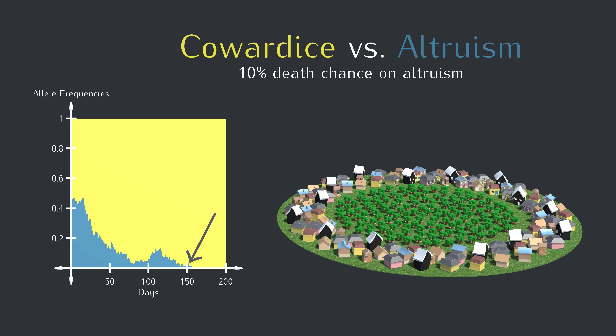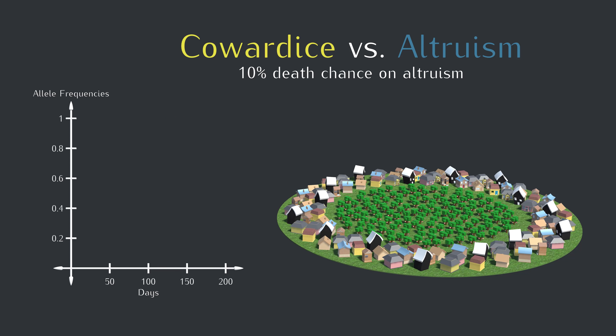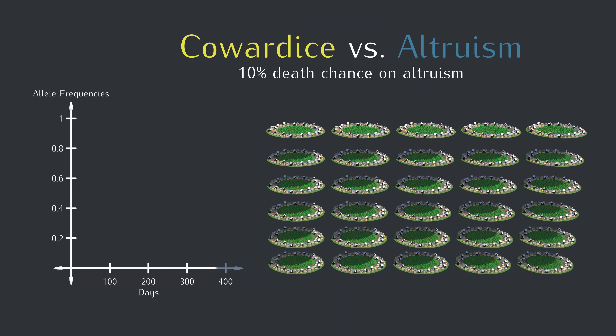Now you might think: we only tried this once — maybe it'll do better some of the time? So let's repeat 30 versions of the same situation. Predict ahead of time what you think will happen. Do you think the altruism allele will always go extinct? Or maybe the first run was a fluke, and the altruism allele will actually increase in frequency more often than not. Our brains like to pretend we knew things all along, so it's good learning and science practice to make a prediction before you see a result.